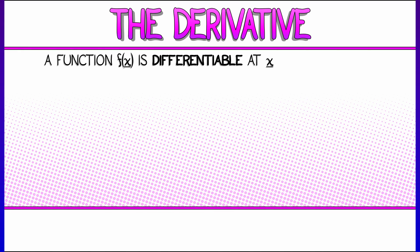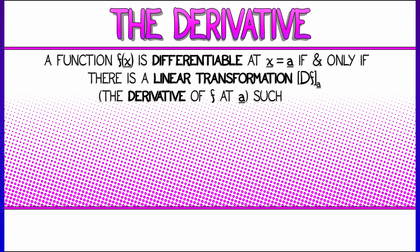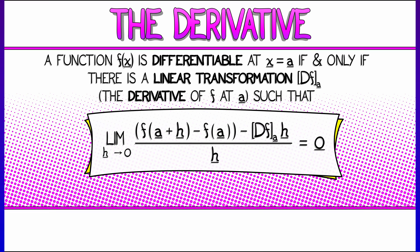A function f(x) is said to be differentiable at x equals a if and only if there is a linear transformation [Df]_a, called the derivative of f at a, such that the following holds. It's a limit as h goes to zero of [f(a+h) - f(a)]/h.